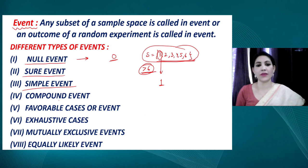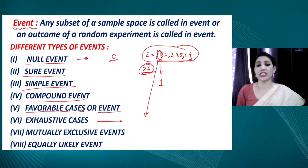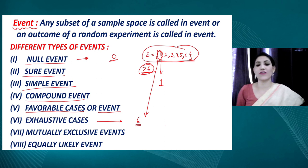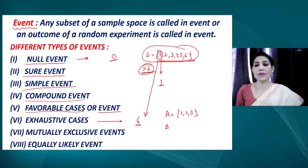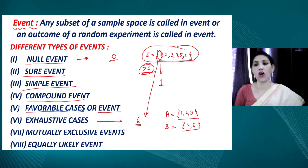A simple event has only one favorable outcome, while a compound event has more than one favorable outcome. Mutually exclusive events have no common outcomes. For example, if event A contains outcomes 1, 2, 3 and event B contains outcomes 4 and 5 from a die, these two events are mutually exclusive because their values are totally different.